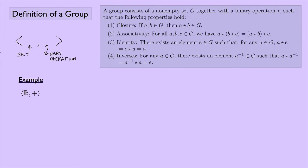Here's an example: suppose we have the set of real numbers under addition. Is this a group? Well, we know that the real numbers under addition satisfy closure, associativity, identity, and inverses. Under addition, the identity element is zero, and the inverse of some element A is negative A. So yes, this is a group.